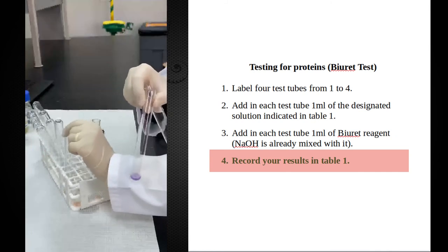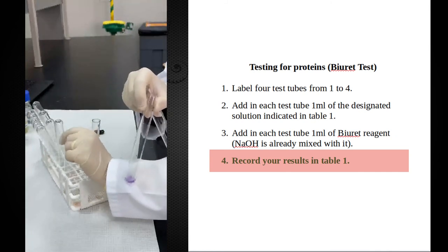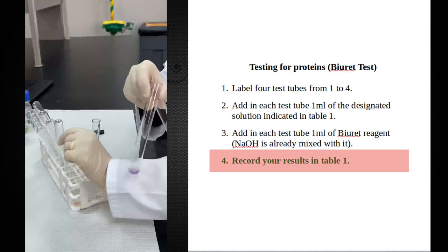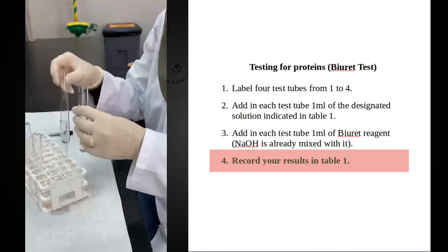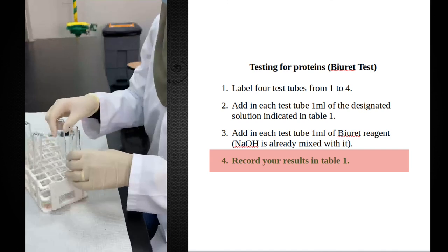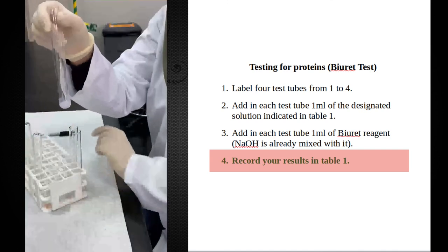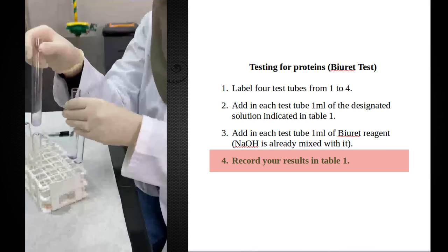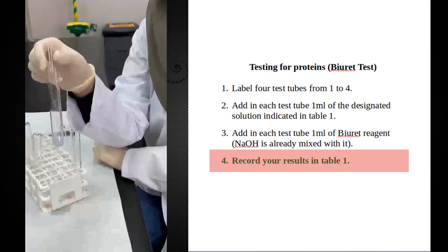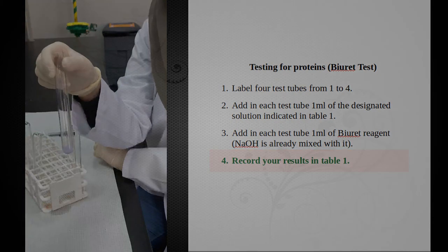And this is the albumin test tube, and this is how a positive result looks like. Negative control, positive control - distilled water, albumin. We look at the milk to identify if it has protein or not. The color, as you can see, is closer to the positive control. It's a violet color, which indicates that milk contains protein.